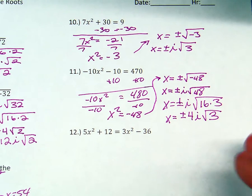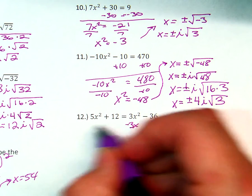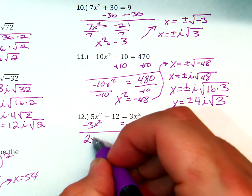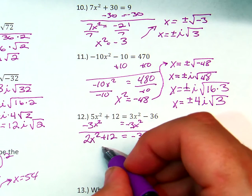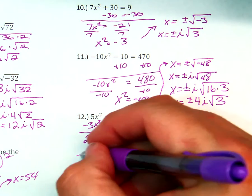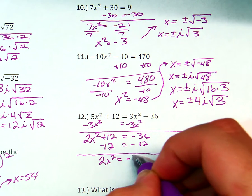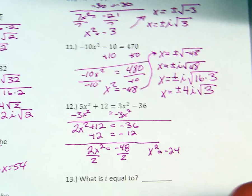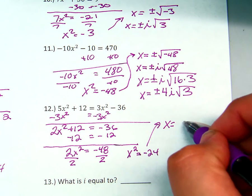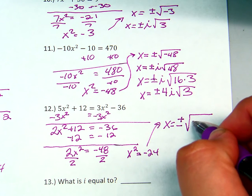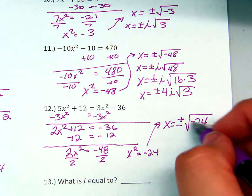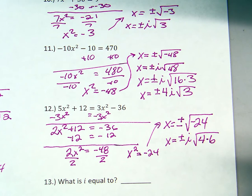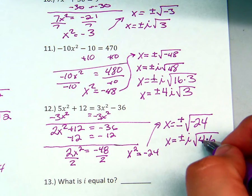Now for this one: subtract 3x squared from both sides to get x squared all by itself. We get 2x squared plus 12 equals negative 36. Subtract 12: 2x squared equals negative 48. Divide by 2: x squared equals negative 24. We bring out an i, and 4 times 6 — the only perfect square that divides into 24. Bring out the perfect square of 4, which is 2. So x equals positive and negative 2i radical 6.